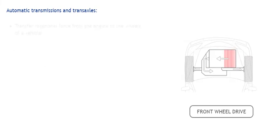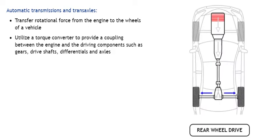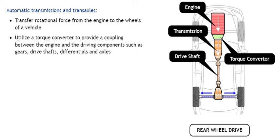Automatic transmissions and transaxles perform the same functions as manual units with a clutch, but they do it automatically. Automatic transmissions and transaxles transfer rotational force from the engine to the wheels of a vehicle, and utilize a torque converter to provide a coupling between the engine and driving components such as gears, driveshafts, differentials, and axles.